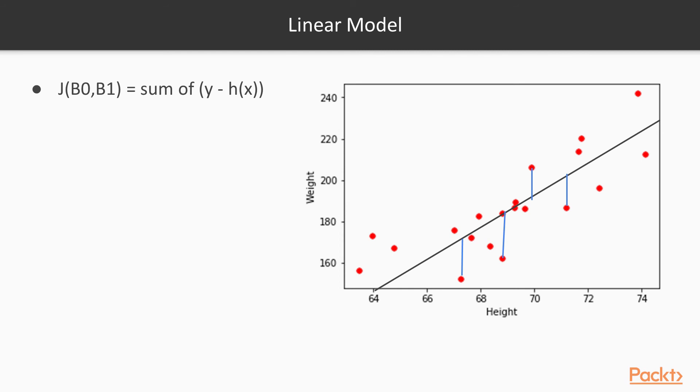And to quantify this error, we use the sum of the actual value minus the predicted value. But if we did that, it would normalize the positive and negative values. So instead, we take the sum of all the squared errors, which is the actual value minus the predicted value squared. This is also known as a cost function j, called the ordinary least square error.